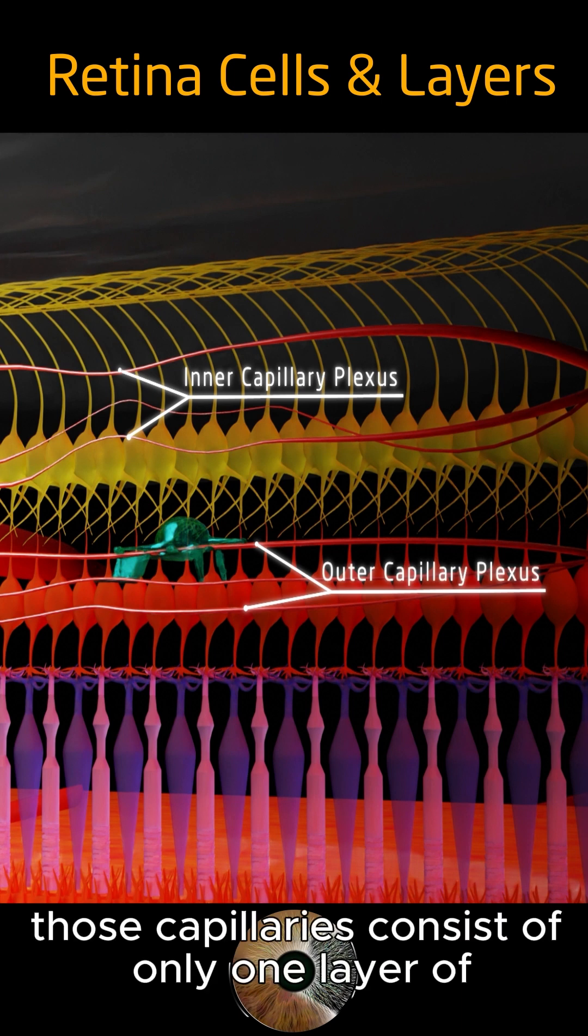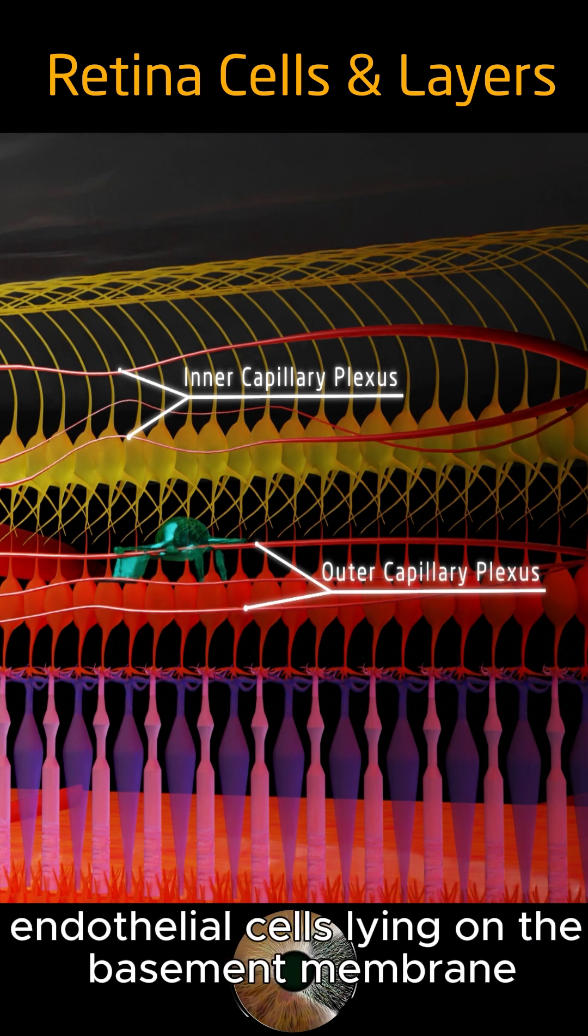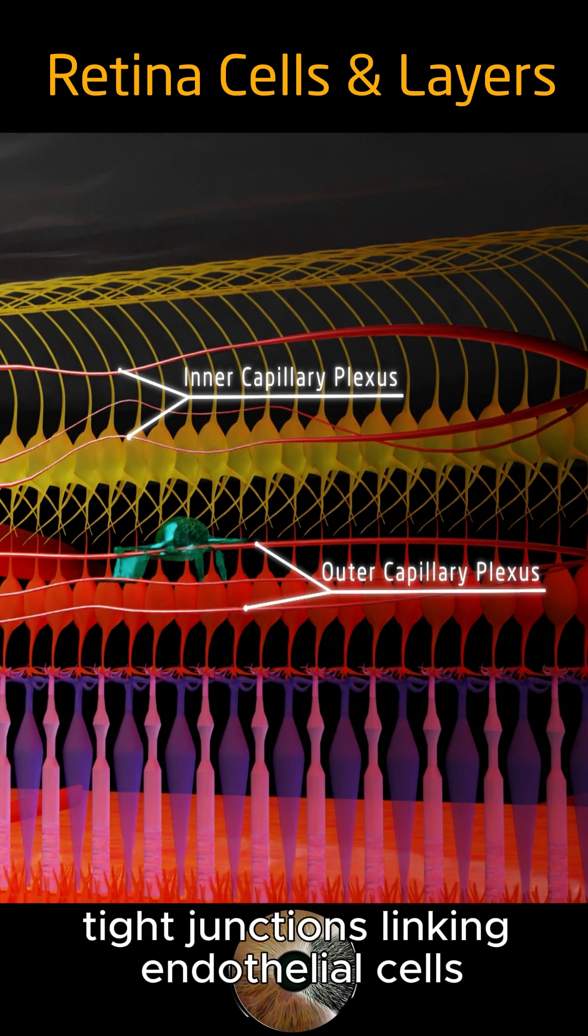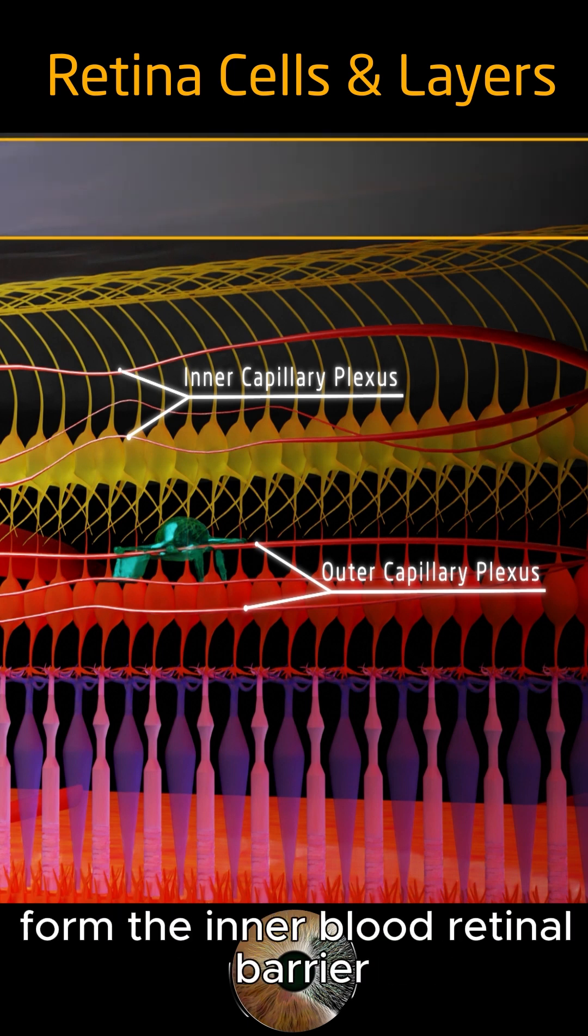Those capillaries consist of only one layer of endothelial cells lying on the basement membrane. Tight junctions linking endothelial cells form the inner blood-retinal barrier.